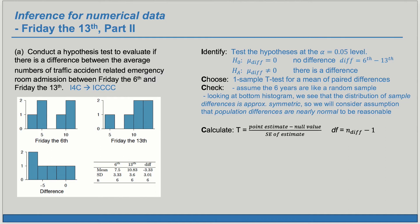Now we're ready to calculate our t-statistic, which is the point estimate minus the null value divided by the standard error of the estimate. Our point estimate for the true mean of the differences is the sample mean difference, given here as negative 3.33. Our null value for the mean difference from H₀ is zero. We divide by the sample standard deviation of 3.01 over the square root of n, so over square root of 6. Our degrees of freedom is the number of differences minus one — we have six differences, so five degrees of freedom.